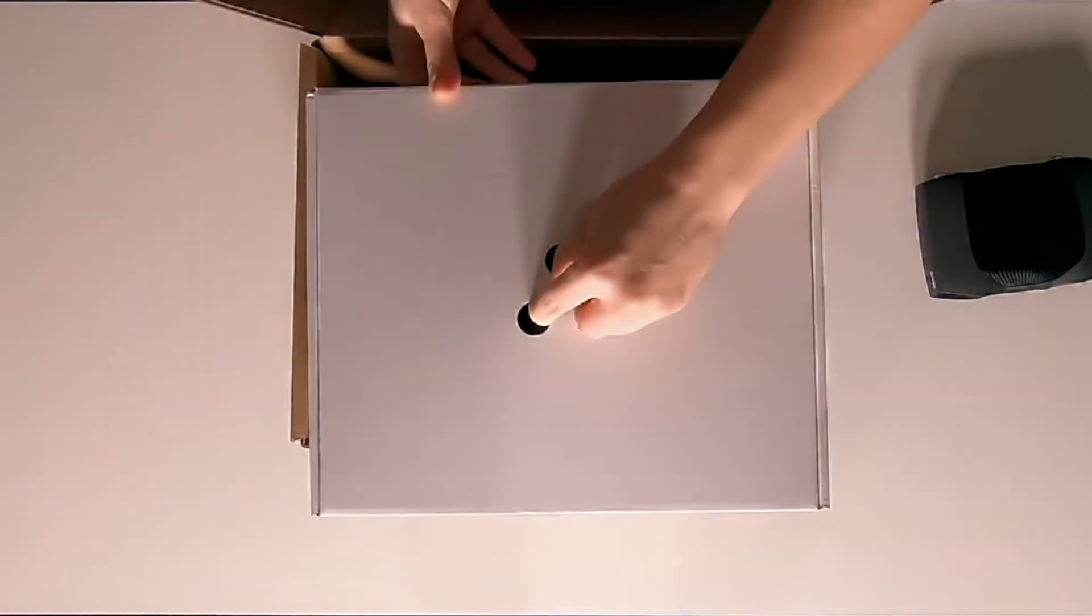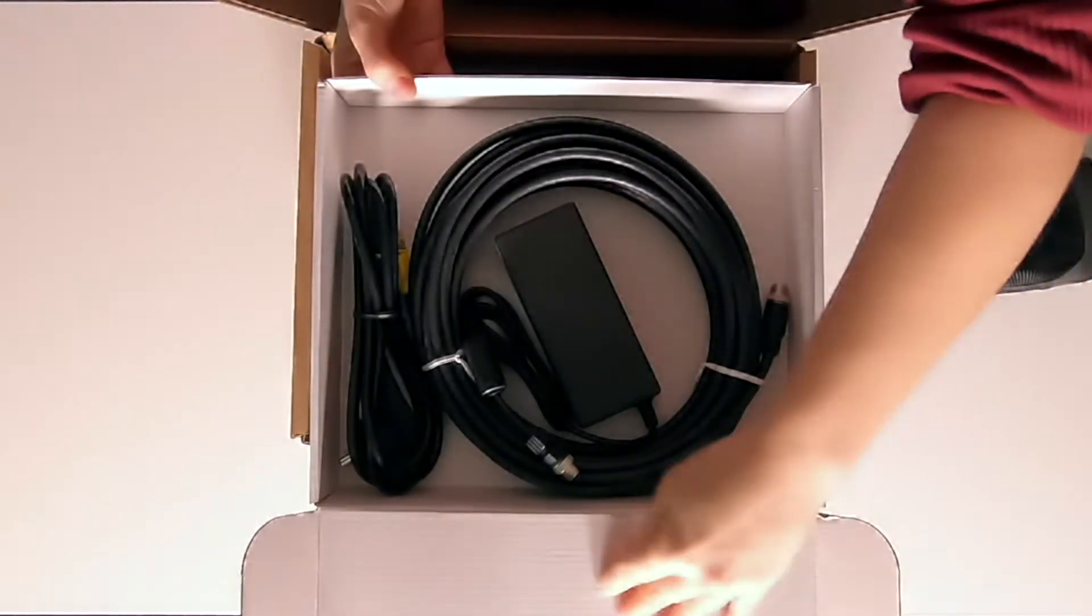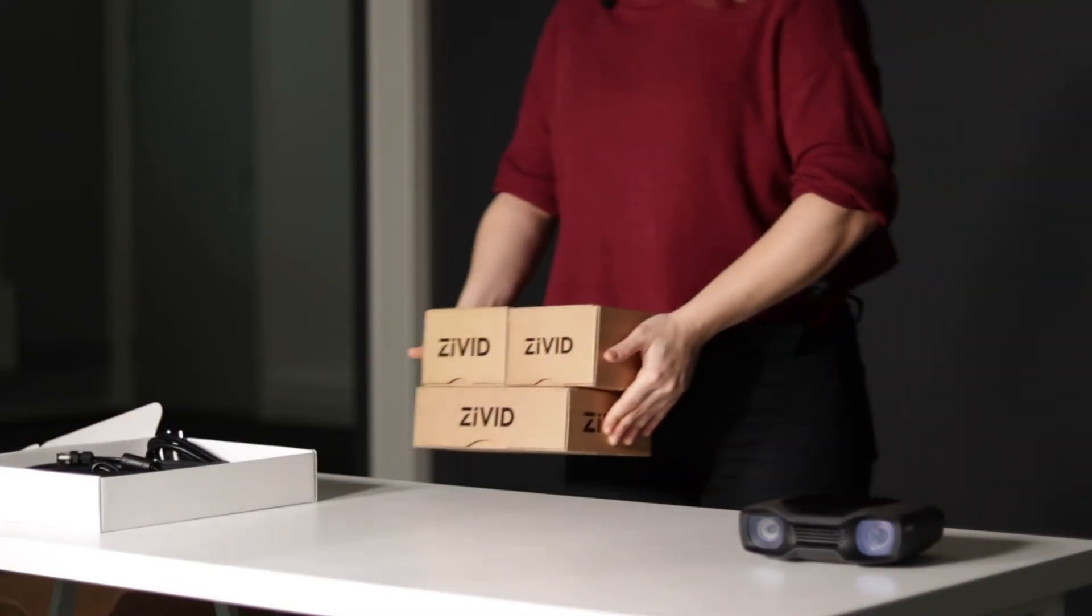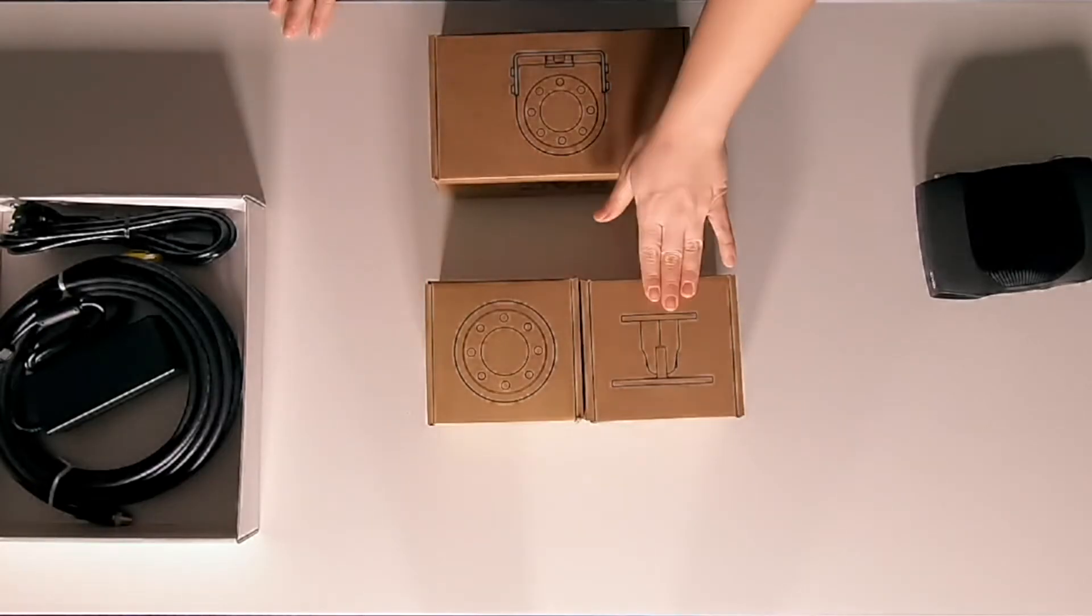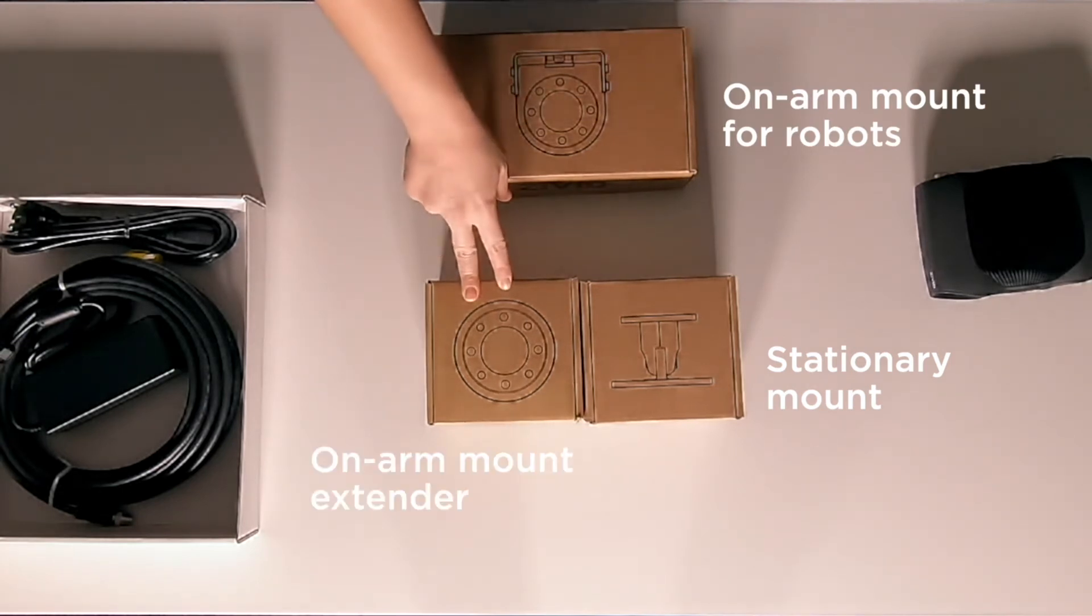Also in the main box we have our power adapters as well as our ethernet cables. We also have accessories that go with the Zivid 2 camera. We have a stationary mount, robot mount, and a robot mount offset.